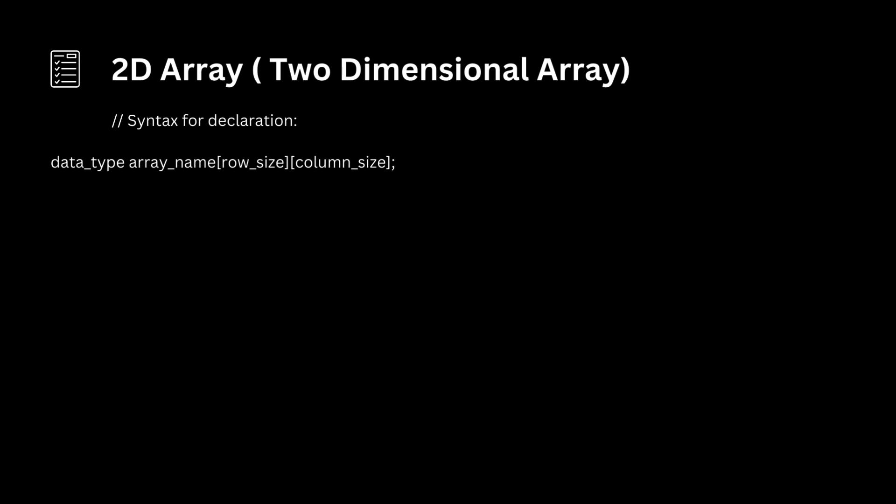Let's break down each part of the syntax. Data type: this is the type of data that the array will hold. In the example provided, the data type is int, meaning the array will store integers. Array name: this is the name given to the array. In the example, it's called matrix.